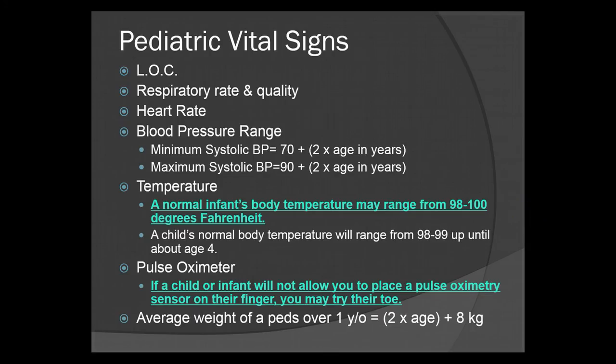Pediatric vital signs. You're going to assess the level of consciousness — this may fall under the AVPU scale, and more often than not, it's going to be a revised scale. You're going to check respiratory rate and quality. If it's poor quality, they're not getting enough oxygen into their system, and intervention needs to be taken as quickly as possible.